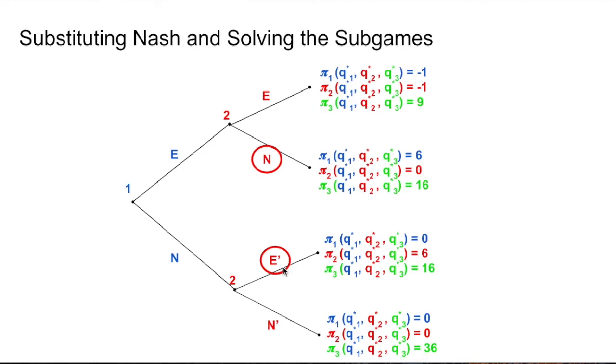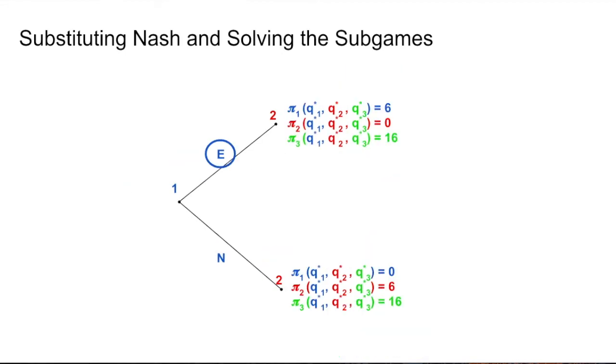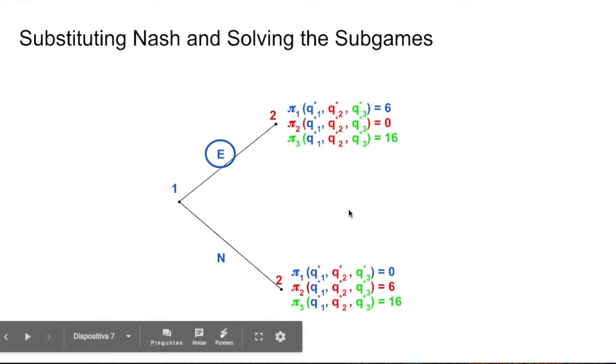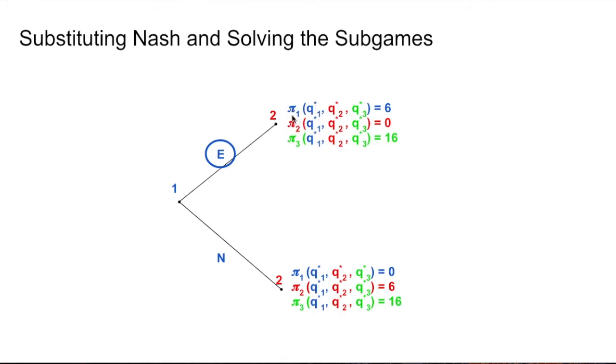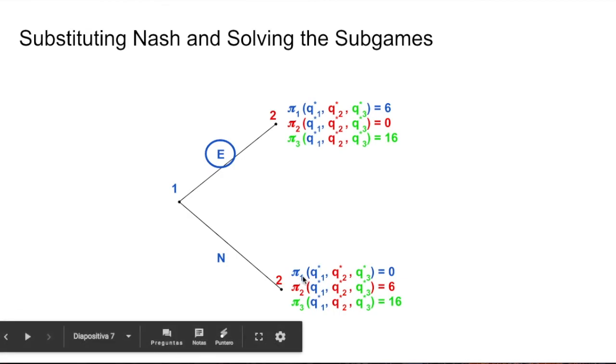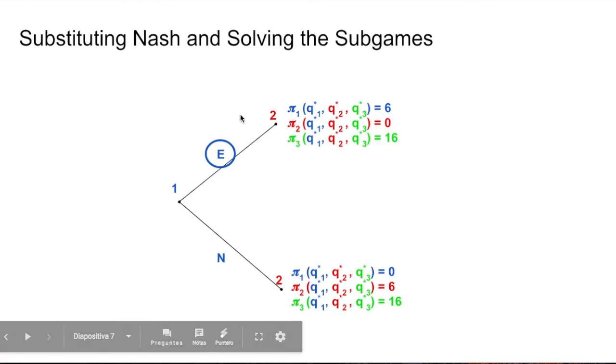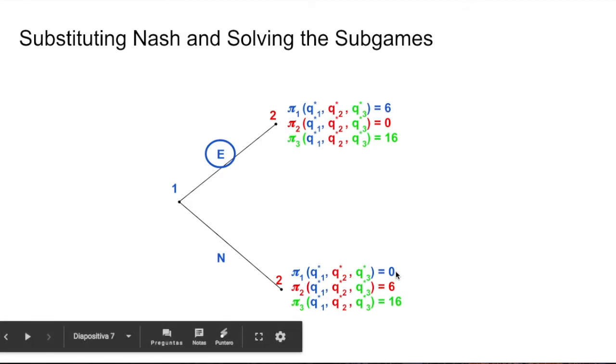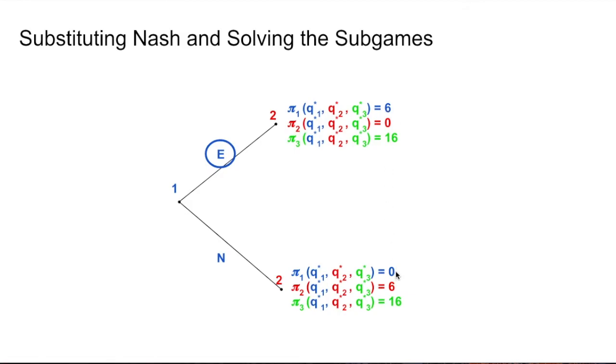So we roll back the solution at the very beginning, and now it's just firm one to decide. And when firm one has to decide, she's going to compare the payments for firm one. And if you have this, then you're going to compare five versus zero. That's a payment of firm one. So the firm is going to choose E because six is higher than zero. And this is the way you solve this game.